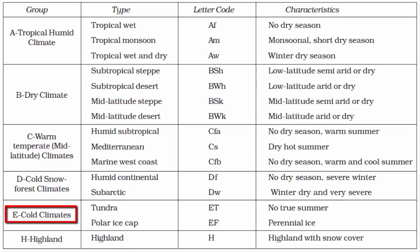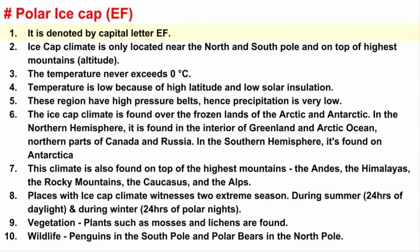In this video, we will learn about Ice Cap Climate. It is denoted by capital letter E, F. Capital letter E denotes the entire group which is cold polar climate, and F is for ice caps, which is a subtype under polar climate.